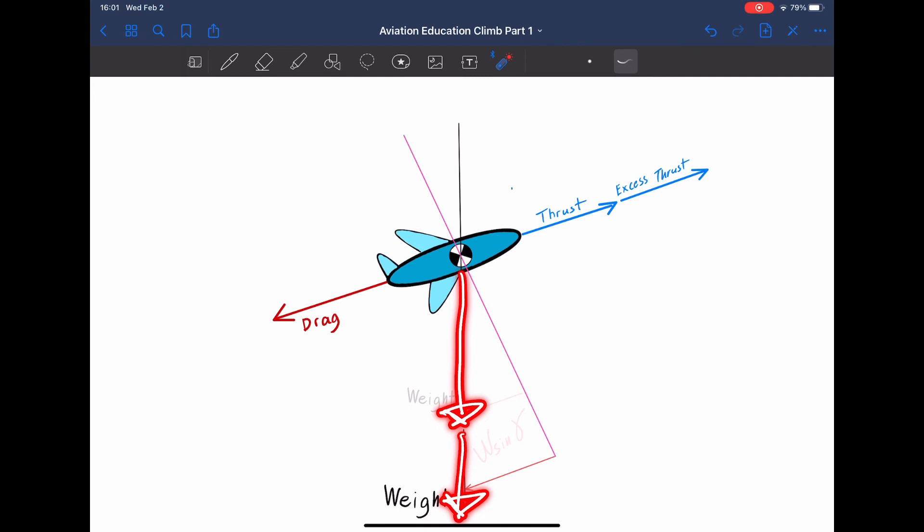You can see that the weight increase does not further increase the weight apparent drag, therefore not requiring as much excess thrust in order to maintain a constant speed climb. By reducing the climb angle, we can reduce the thrust required.